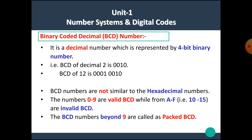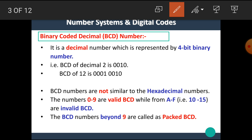Now let's start our today's topic. Our today's topic is the binary coded decimal, that means BCD number. BCD is a decimal number which is represented by a 4-bit binary number. The BCD is nothing but a decimal number, but the only difference is that this decimal number is represented by its equivalent 4-bit binary number.